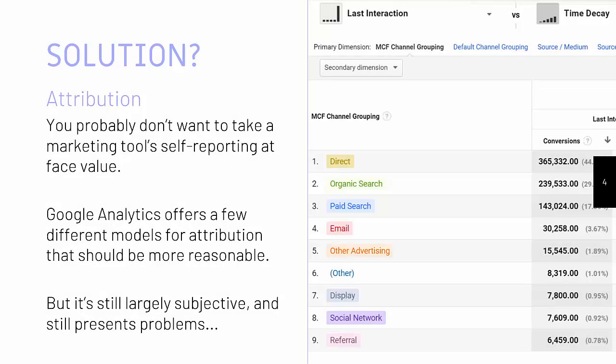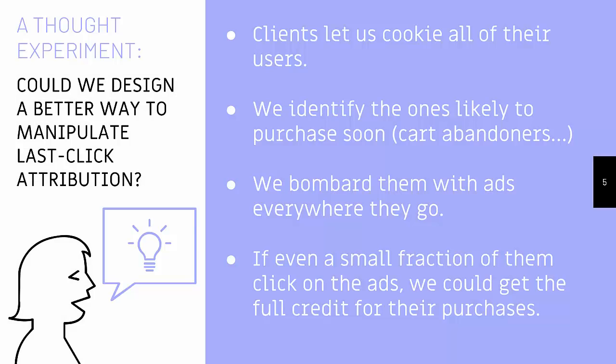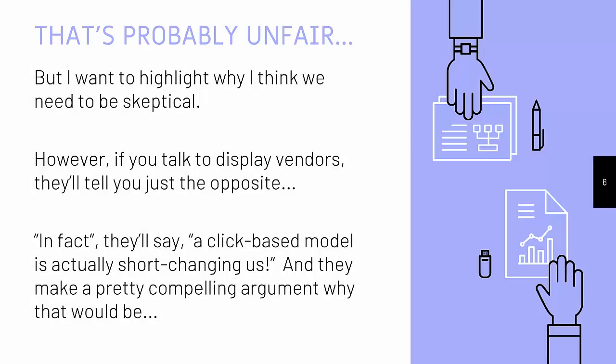There are some options. You could try attribution — that's the go-to for solving a lot of marketing valuation problems. You definitely, in most cases, don't want to take a marketing tool's self-reporting at face value. Tools like GA or other attribution services offer something more fair and divide that revenue. But it's still mostly a subjective thing. Attribution is really just a guess on how the logic works. I want to go through a quick thought experiment about why I think we should be skeptical. Can we even design a better way to manipulate last-click attribution than what retargeting is able to do? Your client lets you cookie all their users. They identify the ones that are just about to convert anyway. They bombard them with ads everywhere they go. And if you get them to click on a few ads, you get full credit for that sale. That's why I think we need to be skeptical about just taking an attribution model at face value when it comes to retargeting.